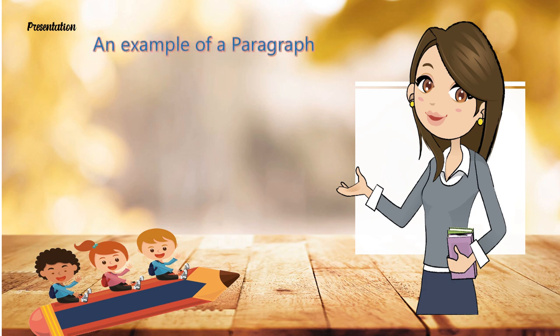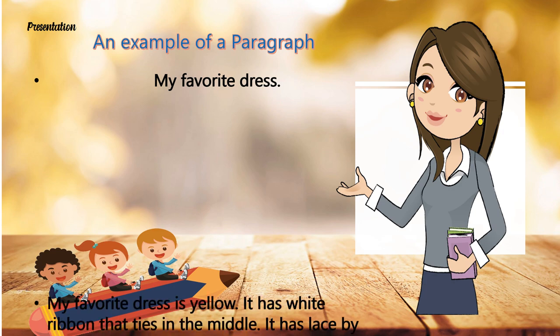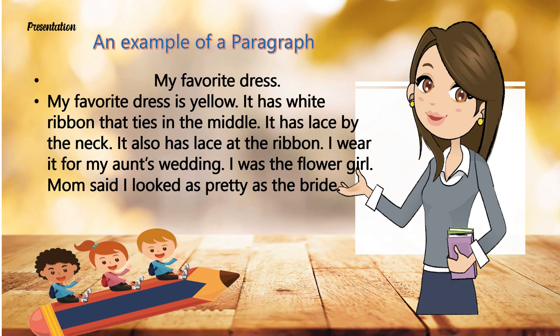We have here an example of a paragraph. Let me read it to you. My Favorite Dress. My favorite dress is yellow. It has a white ribbon that ties in the middle. It has lace by the neck. It also has lace at the ribbon. I wear it for my aunt's wedding. I was the flower girl. Mom said I look as pretty as the bride.